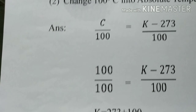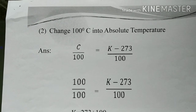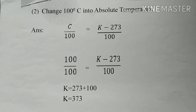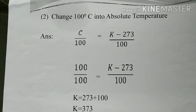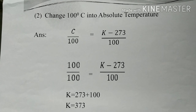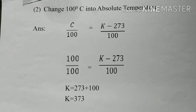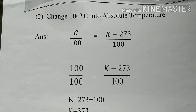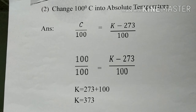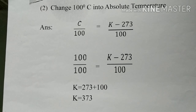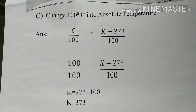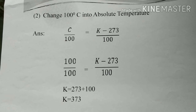Second example: change 100 degrees centigrade to absolute temperature. Using C/100 = (K − 273)/100, substitute C = 100: 100/100 = (K − 273)/100. Canceling 100 on both sides gives K = 273 + 100, so K = 373. Therefore, 100 degrees centigrade is equal to 373 Kelvin.